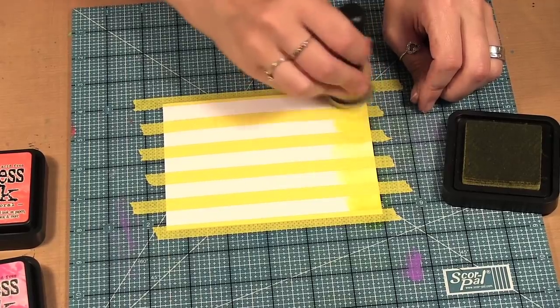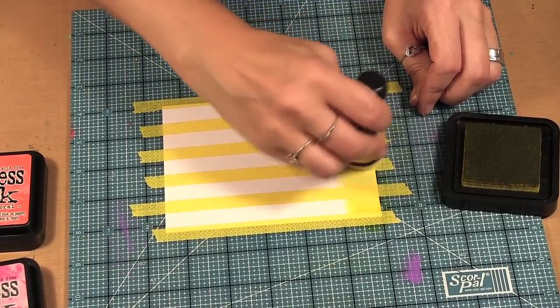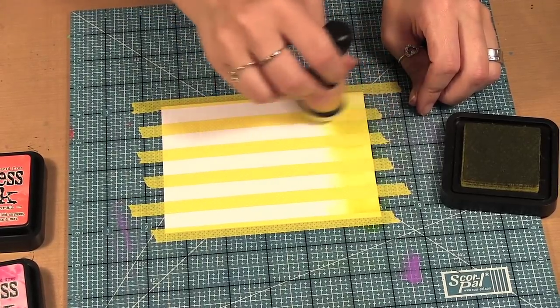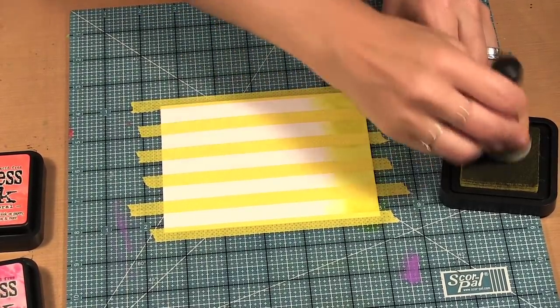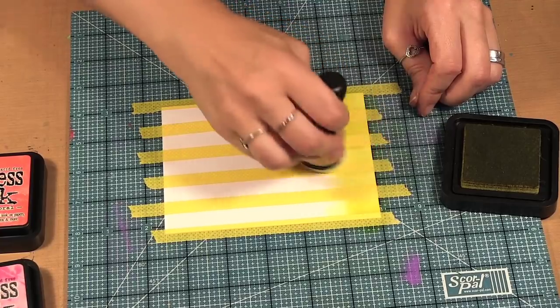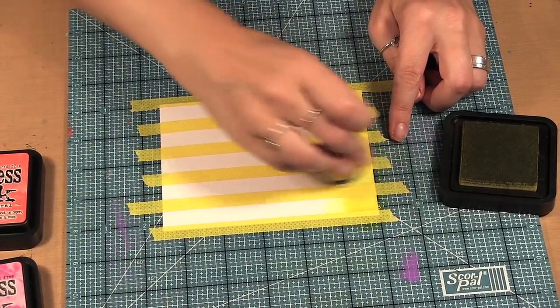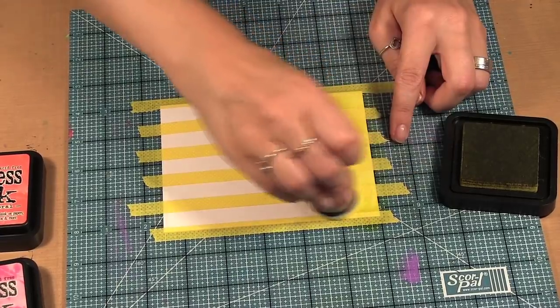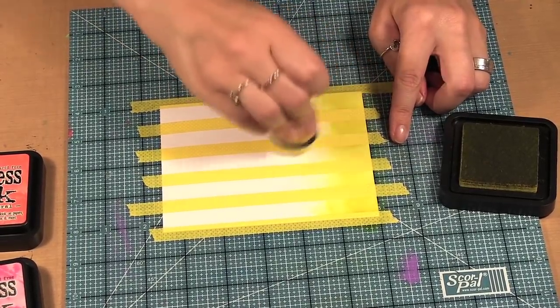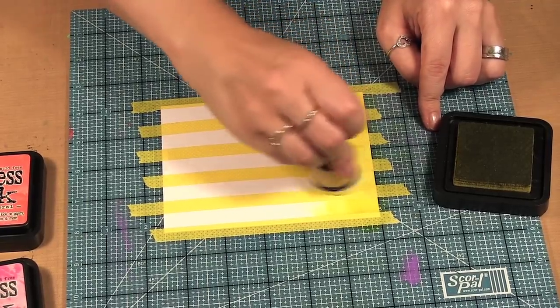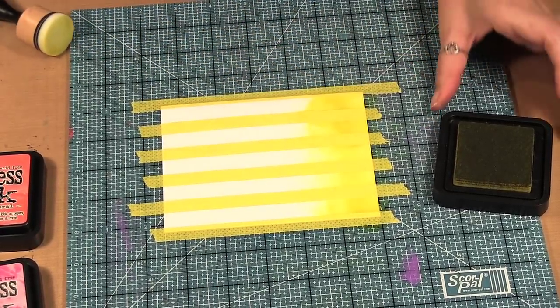Now because I'm using five colors, I want to do about a fifth of the card. Now I find if you put too much ink on, that's sometimes when the tape tears up the paper. I think it sort of wets it. Now I like to put a bit of the yellow over the next color where I'm going to overlap it.